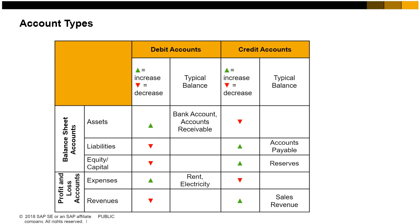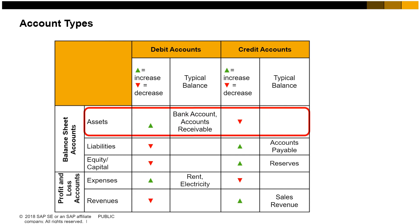For example, let us look at the value exchange for assets and liabilities. For assets, debit transactions always increase the asset value, and credit transactions always decrease the asset value. For liabilities, credit transactions always increase the liability, and debit transactions always decrease the liability. We will discuss the different account types in another course.